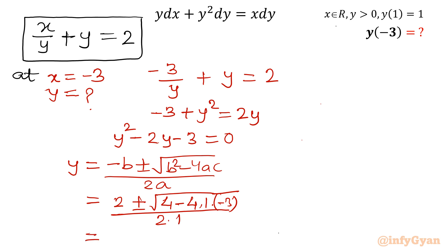So that value will be 2 plus minus square root of 4 plus 12 over 2. So y will be equal to 2 plus minus root 16, so 4 over 2.